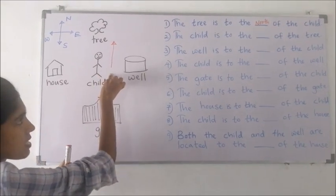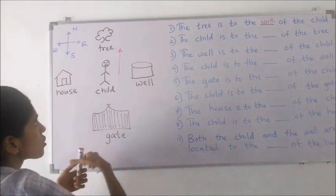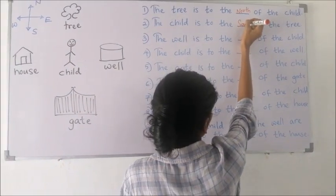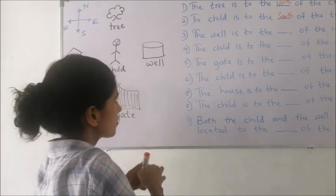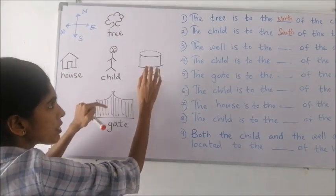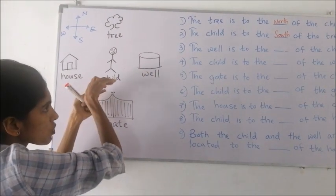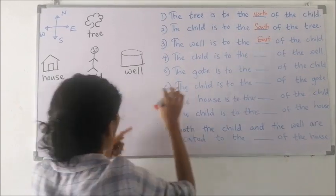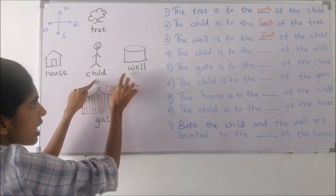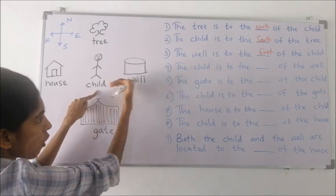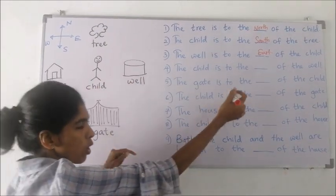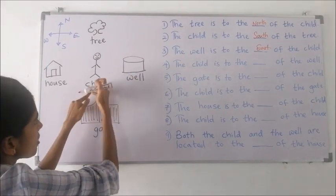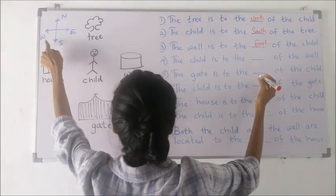The child is to the south direction of the tree. The well is to which direction of the child? It is the east direction. And when we look at the child from the well, the child is to the west direction of the well.